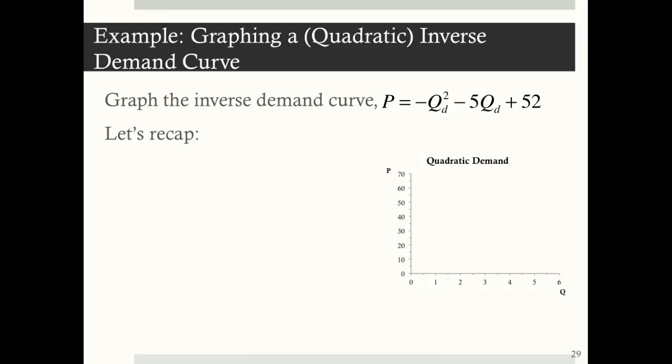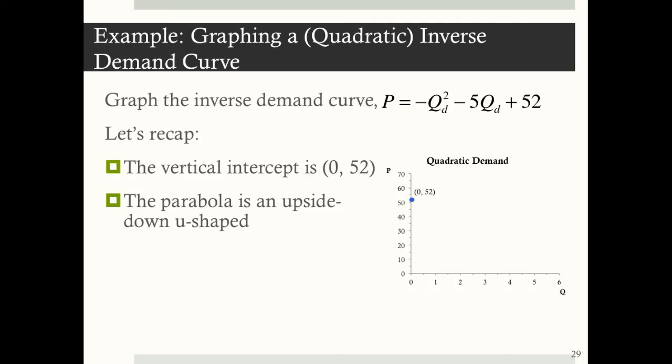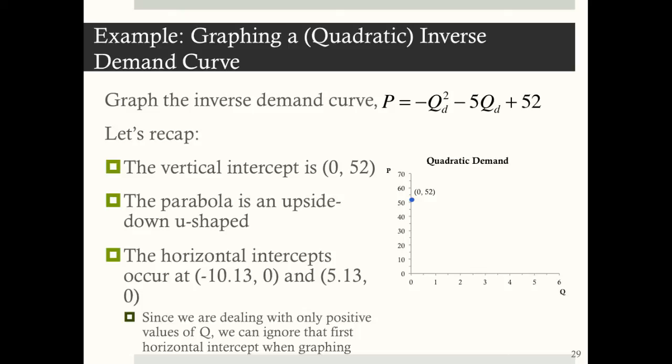So let's recap what we learned. The vertical intercept is 52, and I'll mark that on the graph. Because we're working with a demand curve, quantities and prices can only be positive, so we're working with quadrant 1 only. The parabola is an upside-down u shape. The horizontal intercept at negative 10.13 is ignored since we don't deal with negative quantities. We focus on the second horizontal intercept at 5.13. Drawing a curved line — not a straight line — gives us the demand curve.